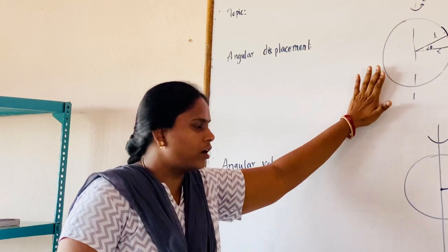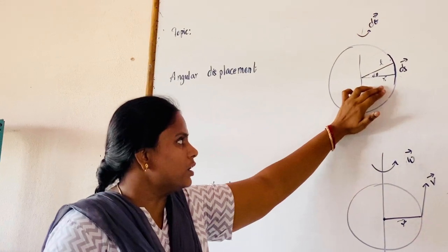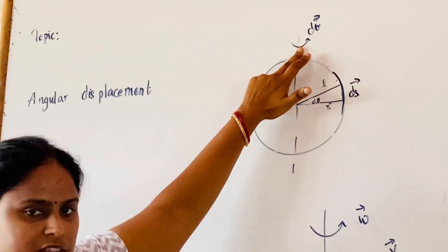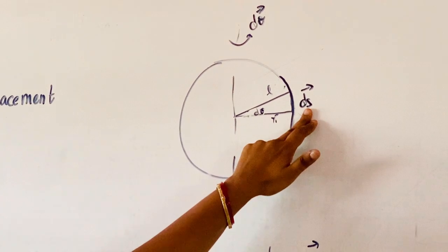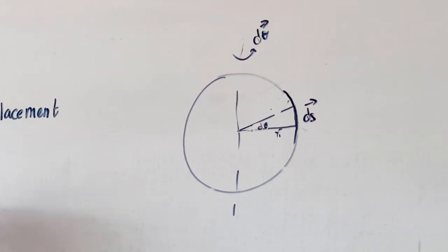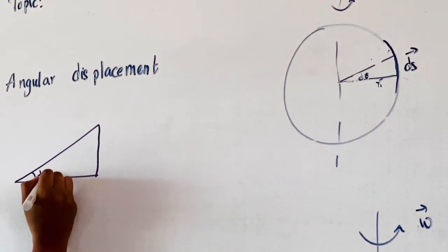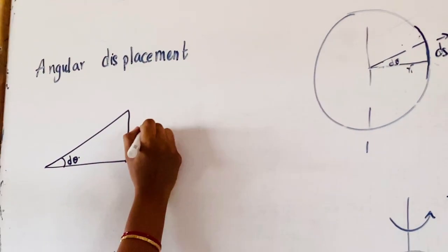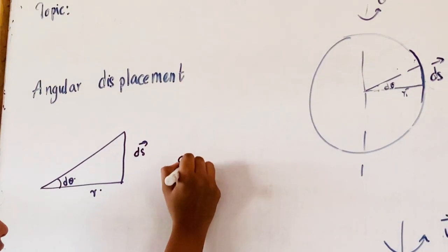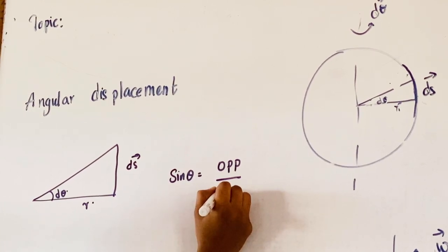We have already seen that the angle created by the radius vector is called angular displacement. Here R is the radius vector, d-theta is the angular displacement vector, and ds is the linear displacement vector. When we consider it as a triangle, this is the small angular displacement, this is the small linear displacement, and this is the radius vector. We all know the formula for sin theta — sin theta is equal to opposite side by hypotenuse.